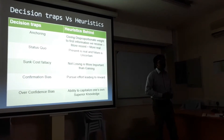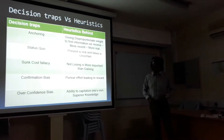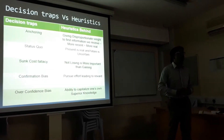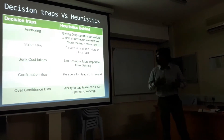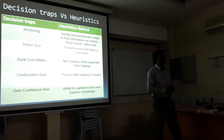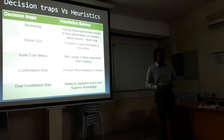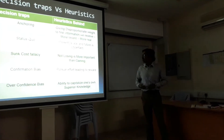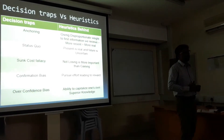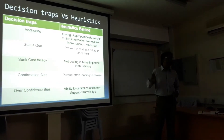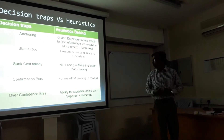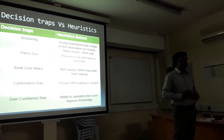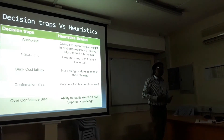Number one: anchoring. Anchoring is essentially a marketing concept — the heuristic behind it is giving a disproportionate weight to the first information we receive. Number two: status quo. A person suffering from status quo bias always thinks the present is real and the future is uncertain, so they will not take any decisions. Number three: sunk cost fallacy. A person suffering from this will always prefer not losing over gaining — not losing is most important to them. Number four: confirmation bias. People suffering from confirmation bias will always pursue efforts leading to reward, and will always conclude with a positive note, assuming they already own the reward.